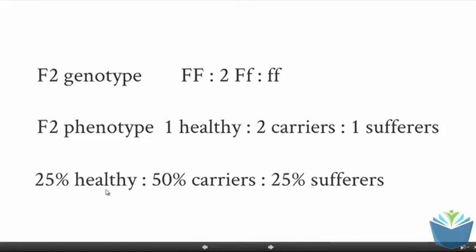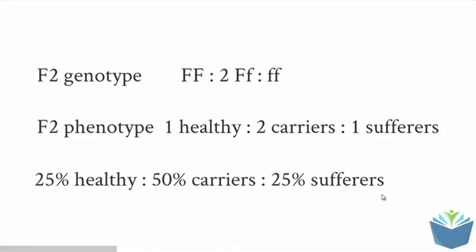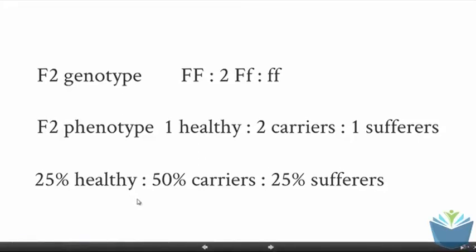This would give you a 25% chance of producing somebody who's healthy, 50% chance you'd expect carriers, and 25% chance you'd expect sufferers. Now, this is always done by chance. It is possible for two individuals who are carriers for this disease to have four or five kids all with cystic fibrosis. That would be unlikely because there's a one in four chance of those two individuals producing one child with cystic fibrosis. These numbers give an overall estimation or a probability of the likelihood of that outcome.